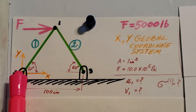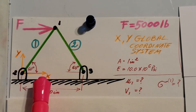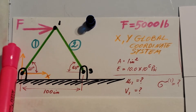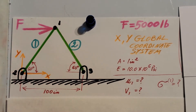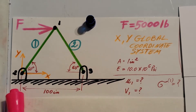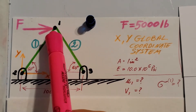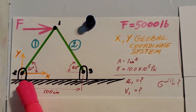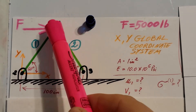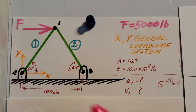Our global coordinate system is at point 2, with x going in this direction and y going up. We can see 60 degrees here and 60 degrees here — this is an equilateral triangle — so we have another 60 here, meaning both other side lengths are also 100 inches.